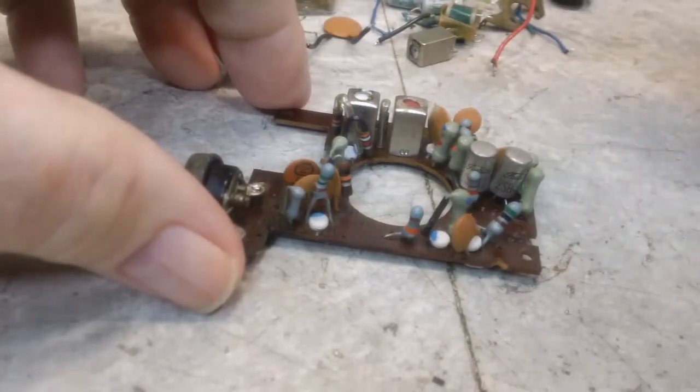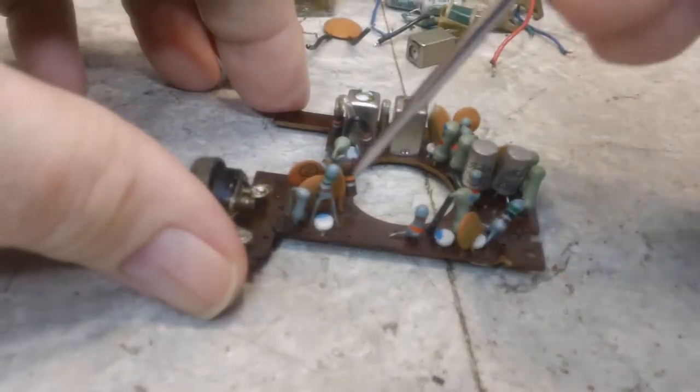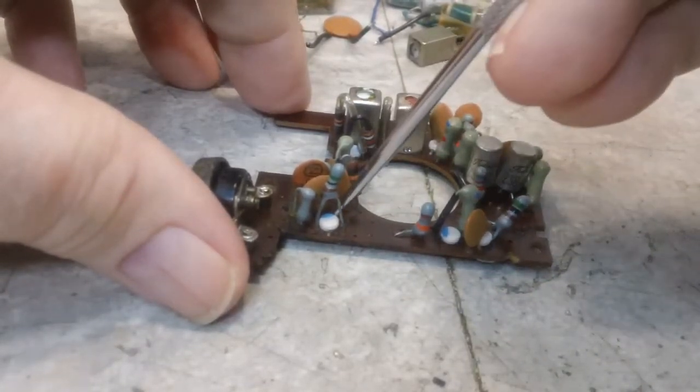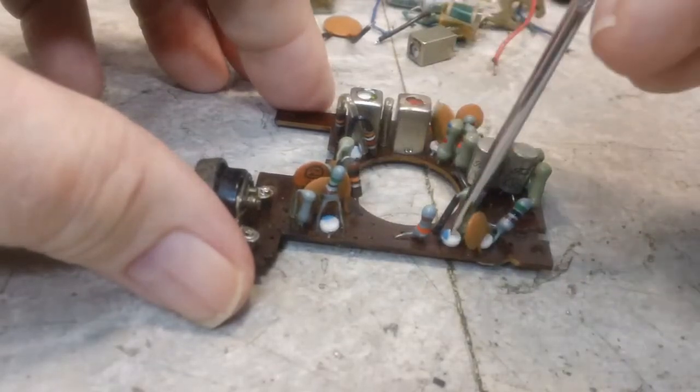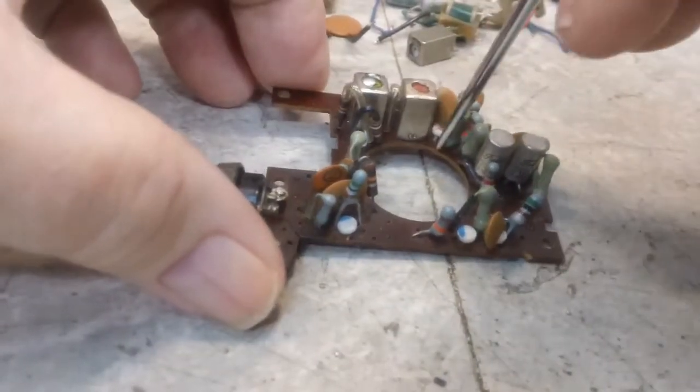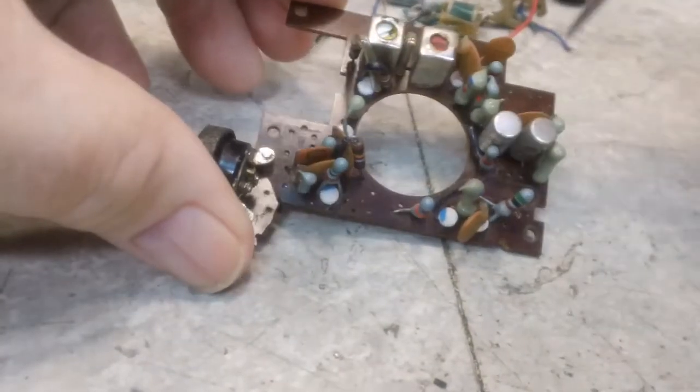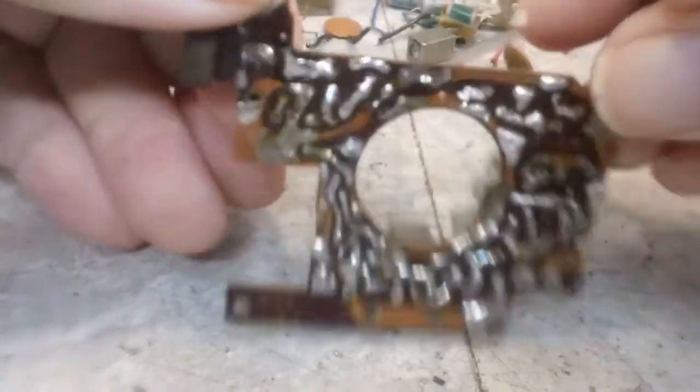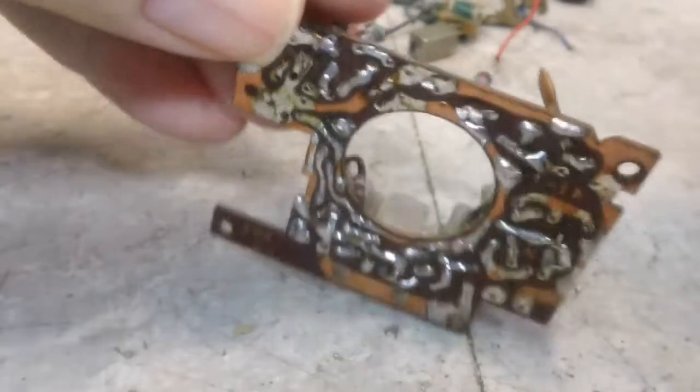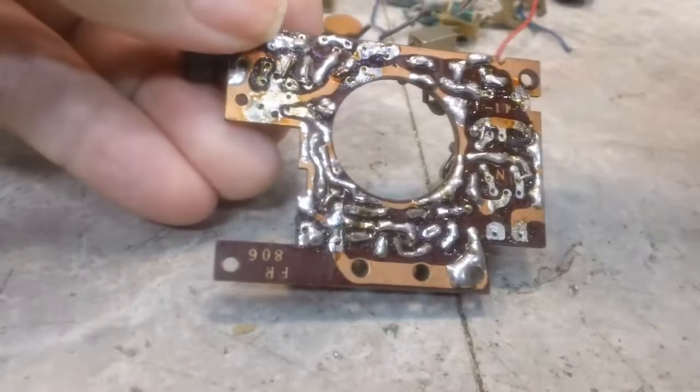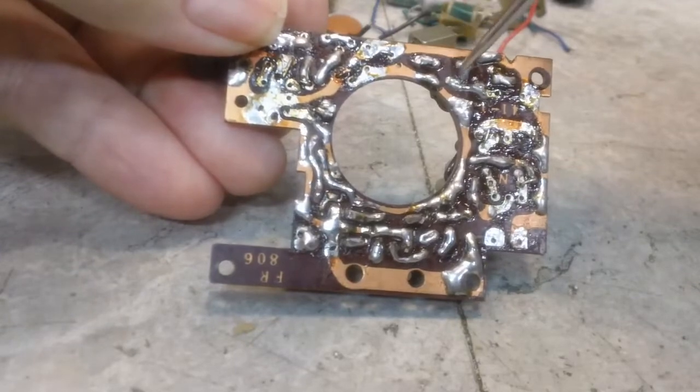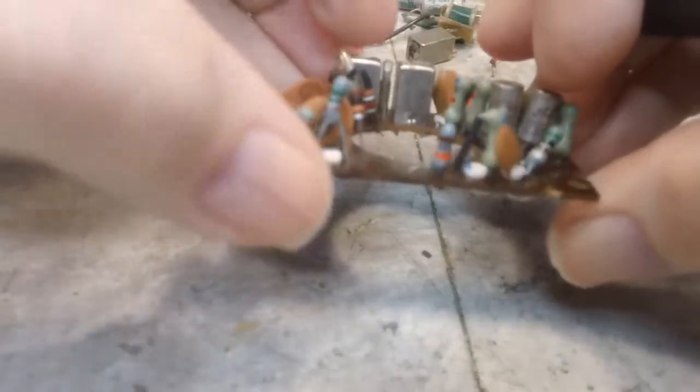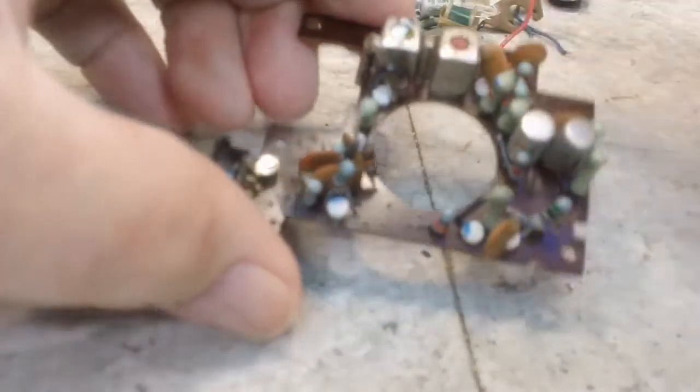Now as far as the other 6 transistors, I cannot find any traditional transistors on this other than those two. Now I did find some white dots, and there are 6 of them. So I'm assuming that is what these are. There's a white one there, there, one there, one under there. I counted them, there are 6 of them. So I'm assuming those are transistors. Now I have never seen transistors like that.